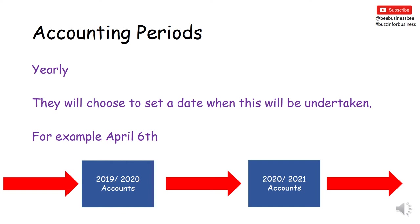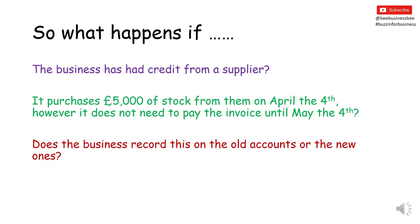This is what makes things a little more complex than what you might understand from a textbook. For example, what's going to happen if the business had credit from a supplier? Credit is giving you time to pay. The business purchases £5,000 worth of stock from the supplier on April the 4th, but it doesn't need to pay the invoice until May the 4th. What period are we going to record that transaction on — the previous accounts or the new accounts? Because we're crossing that line of April the 6th.